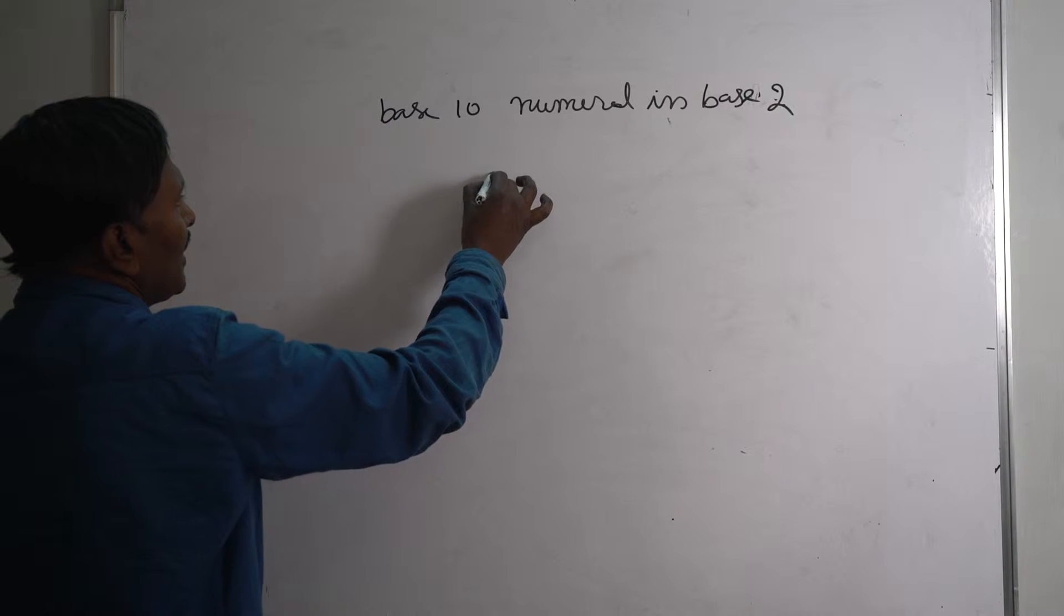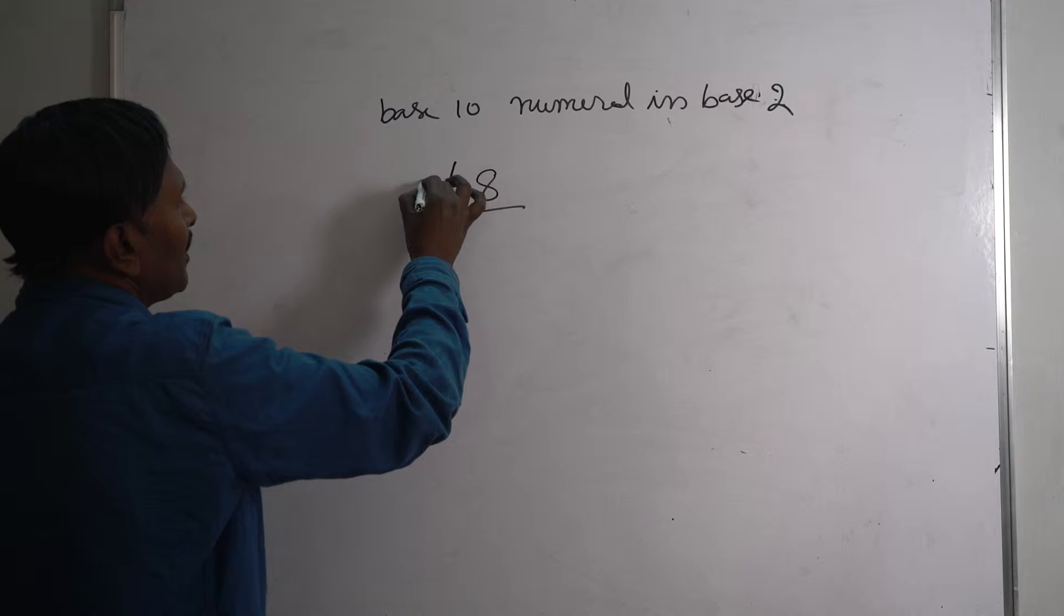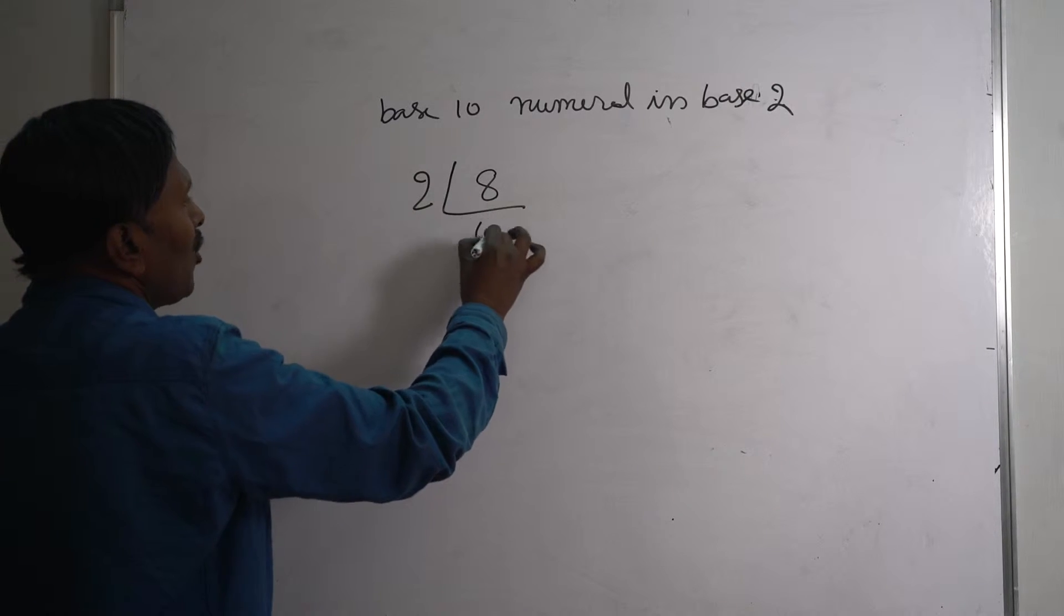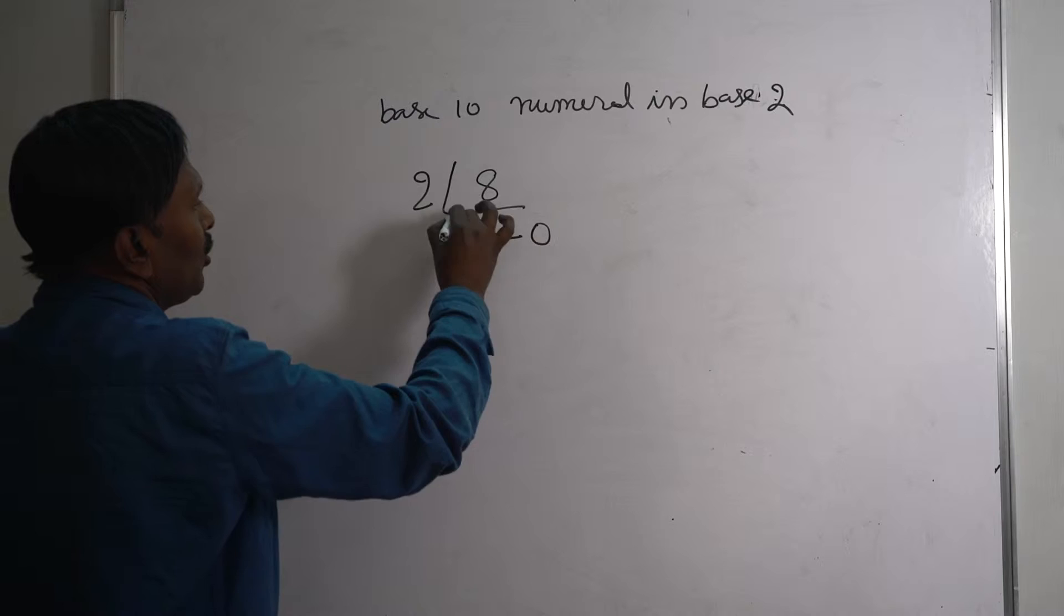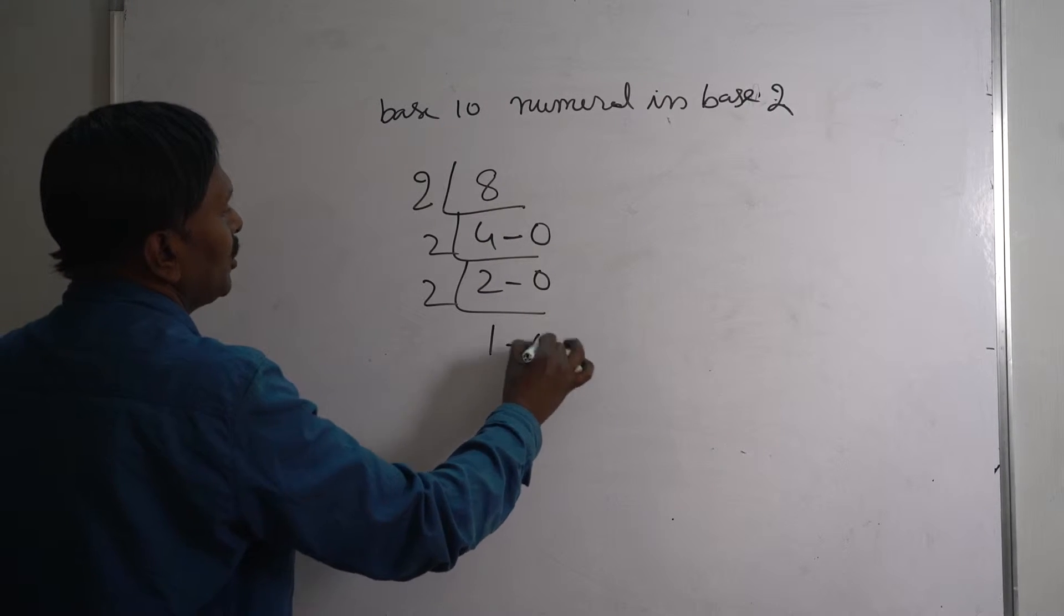Let us suppose 8 is there. How to convert this one? See, divide using factorization method: 2 into 8 gives 4 remainder 0, 2 into 4 gives 2 remainder 0, 2 into 2 gives 1 remainder 0.